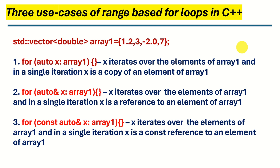First we will briefly summarize the three most common use cases and then later on we will start with coding. To make this presentation less complex and more clear, let's declare a vector of doubles, call it 'array', and initialize it with four values. Here are the three use cases of range-based for loops.